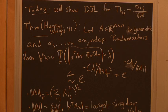Proof of DJL using Hanson-Wright. What do we want? We want to understand ‖πx‖²_2.